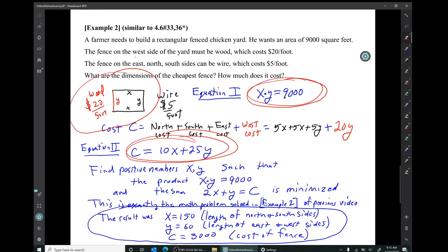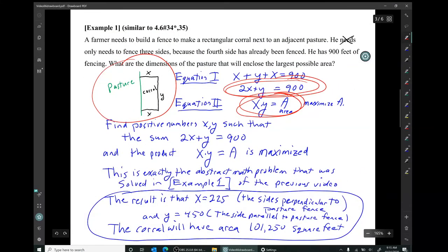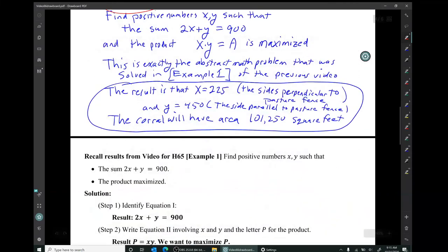Now, notice the difference in the complexity of the resulting math. In the first problem, which had a fixed value for the sum and an unknown value for the area, the resulting function was a second degree polynomial, in other words, a parabola. So it was possible to reason that there would be a max and we found the critical number for that function and we knew that was going to be the x coordinate of that max.